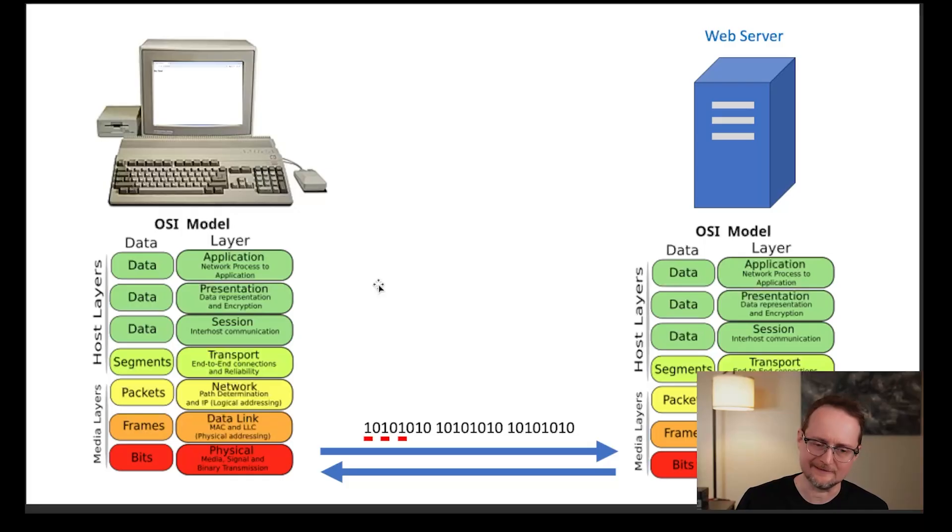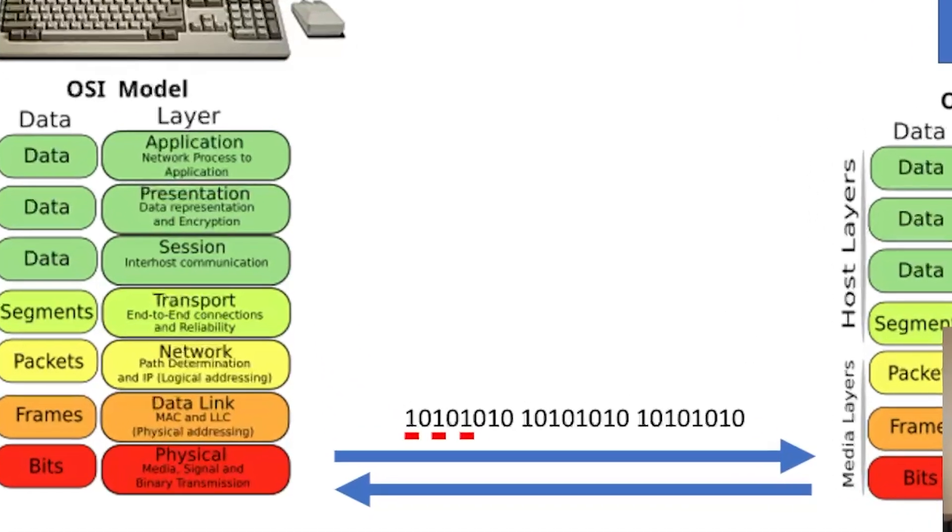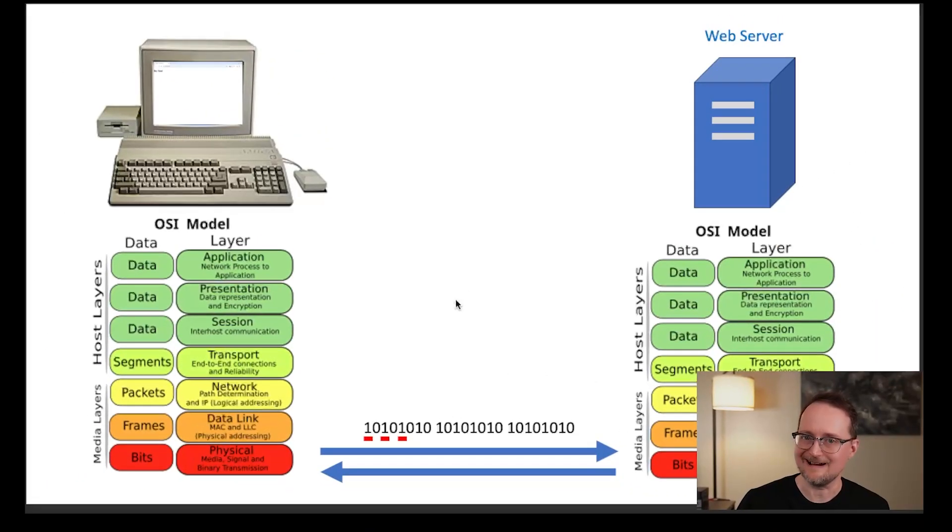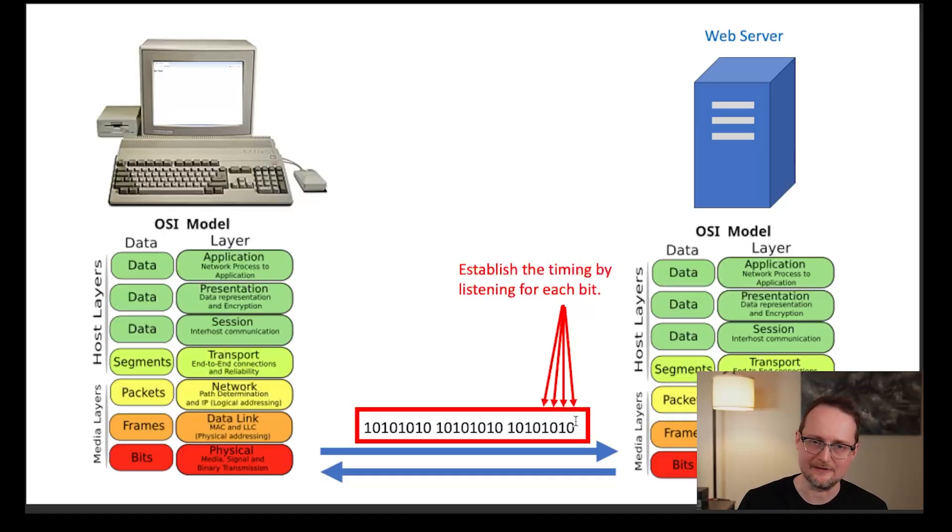The transmission starts with a pattern of seven identical bytes and you may wonder what is the significance of this pattern and the answer is it has to do with timing. So if the computer on the left is sending information at one bit per second but the server on the right is expecting bits every two seconds, you're going to be missing a lot of data. By the time the data is processed by the receiving computer, it'll think it's processing all ones instead of the alternating pattern.